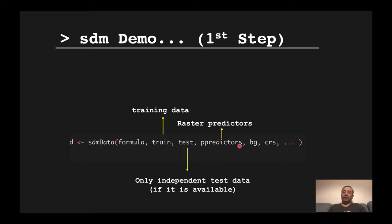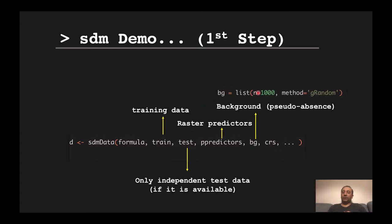If your data is presence-absence or abundance, you're fine. If it's presence-only, you need to specify the setting for background or pseudo-absence data. The setting for generating background data is defined here — for example, you can simply say use a random distribution over geographical space and generate 1000 records. Alternatively, you can introduce background records separately as a data frame that contains all predictor variables plus coordinate columns.